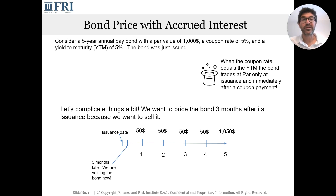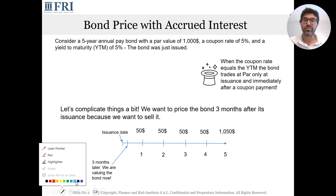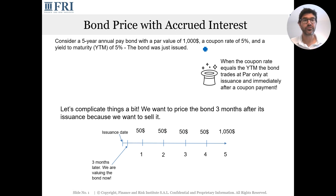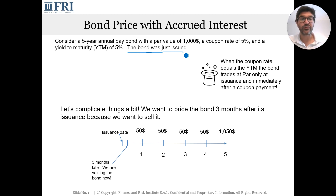Hello everyone and welcome to the Finance and Risk Corner. Today I will explain accrued interest, full and flat prices of bonds. Let's start with a practical example: a five-year annual pay bond with a par value of $1,000, a coupon rate of 5%, and a yield to maturity of 5%. The bond was just issued. If you price the bond by discounting the future cash flows, you get a price equal to par, because the coupon rate equals the yield to maturity.